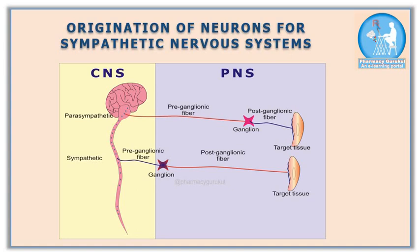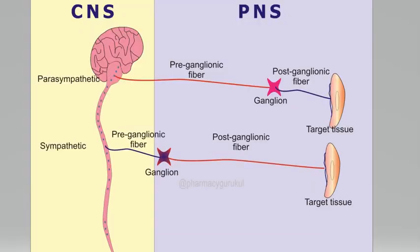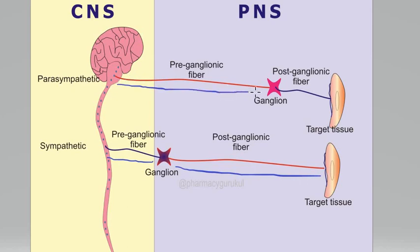Assume there is an emergency situation. In that case, your sympathetic activities are being activated and parasympathetic activities are paused. In the image you can see that the sympathetic preganglionic fiber is shorter whereas the postganglionic fiber in sympathetic nerves is longer. On the other hand, the preganglionic fiber of parasympathetic nerves is longer, whereas the postganglionic fiber of parasympathetic nerves is shorter.